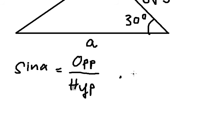The second one, cosine alpha equals adjacent divided by hypotenuse.